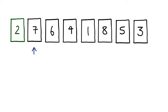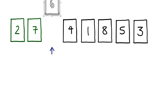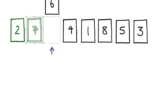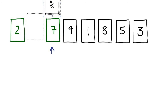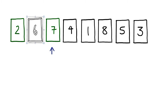We start at the second element, which is 7. Now 7 is technically sorted with respect to 2, so we don't have to do anything and we move on. Now we're looking at 6. The sequence 2, 7, 6 isn't sorted, so we swap towards the left. 6 and 7 exchange places, giving us 2, 6, 7 — and that's sorted.